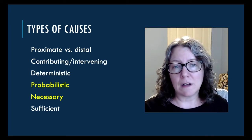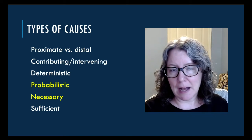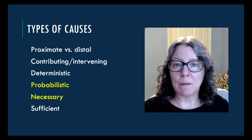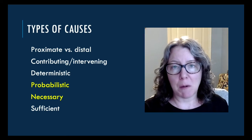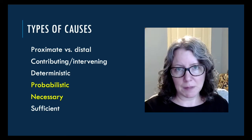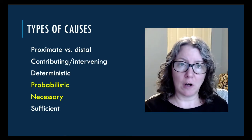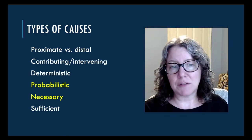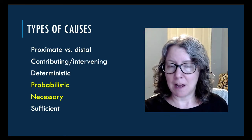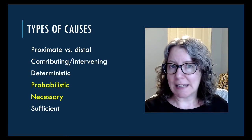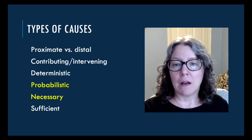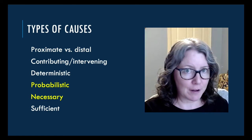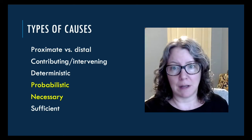Instead, we study what conditions make an effect more or less likely — what might change the probability of an outcome? Sometimes we can identify what are called necessary conditions. These are conditions that have to take place for an effect to happen, but don't guarantee that it will. There are very few cases of transitions to democracy that don't involve some kind of protest, for example.